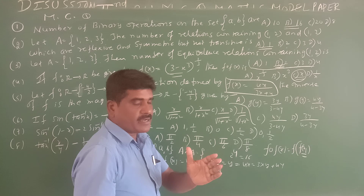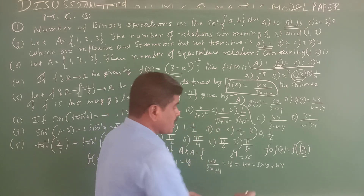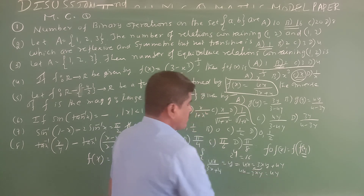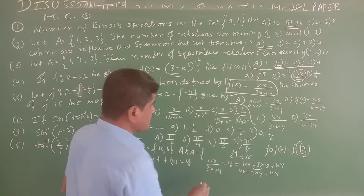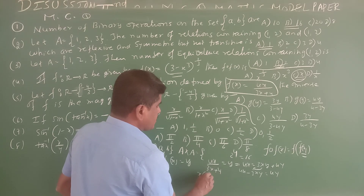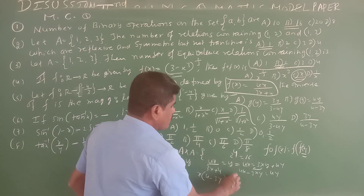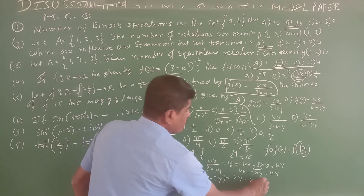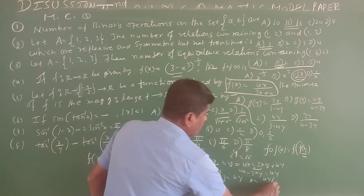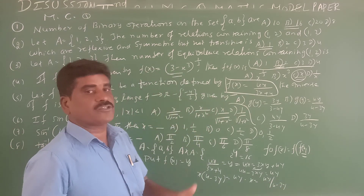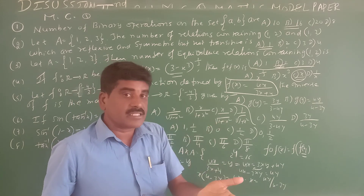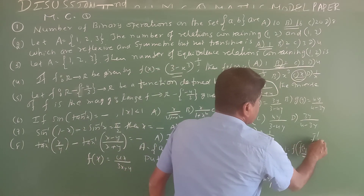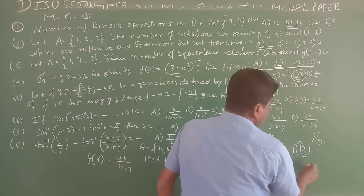Rearranging to solve for x in terms of y: 4x - 3xy = 4y. Factoring out x gives x(4 - 3y) = 4y. Therefore x = 4y/(4 - 3y).